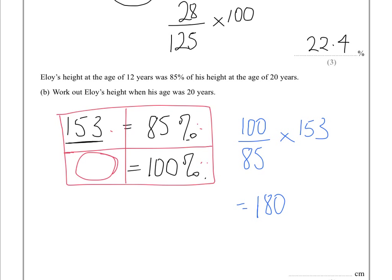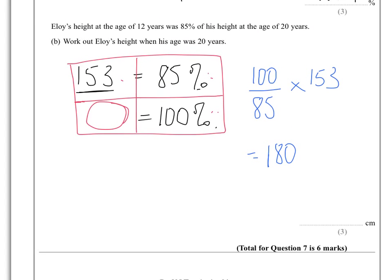So that means that his height when he's 20 is 180 centimeters, and of course we can check to see if we're right by doing 153, his height when he was 12, divided by 180,